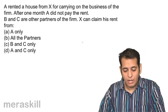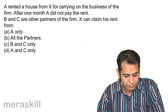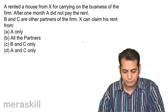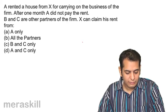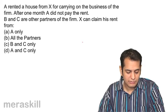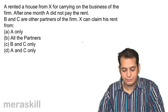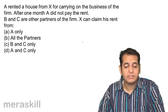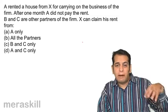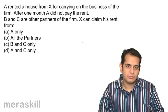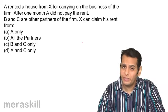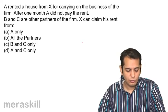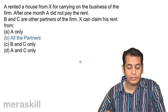Next case: A rented a house from X for carrying on the business of the firm. After one month, A did not pay the rent. B and C are the other partners of the firm. X can claim his rent from: a) A only, b) all the partners, c) B and C only, or d) A and C only. A is binding all partners by his act, so all three partners are liable. X can go to any or all of the partners to claim the rent. The answer is: all the partners.